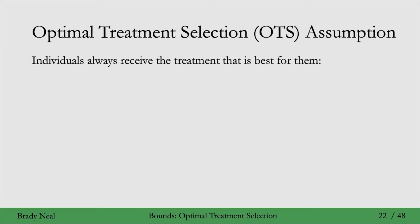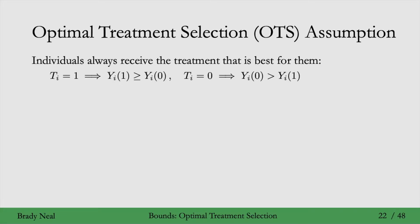The optimal treatment selection assumption states that individuals always receive the treatment that is best for them. Mathematically, if you are in the treatment group, your potential outcome under treatment is better than under no treatment. And if you're in the no treatment group, t equals 0, your potential outcome under t equals 0 is better than under t equals 1. For example, this assumption is satisfied if an expert doctor prescribes the best option to each patient.